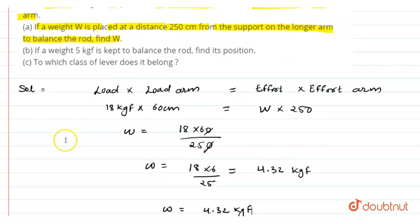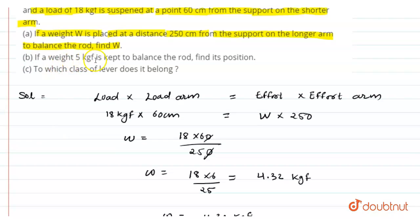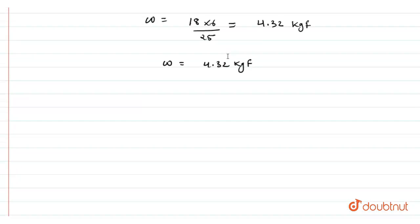Now in the second part, if a weight of 5 kgf is kept to balance the rod, find its position. So again applying the formula: load into load arm is equal to effort into effort arm.